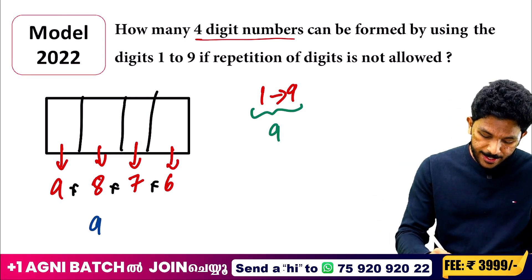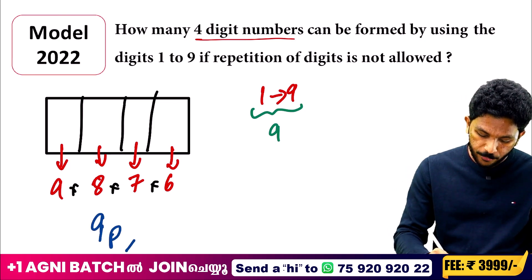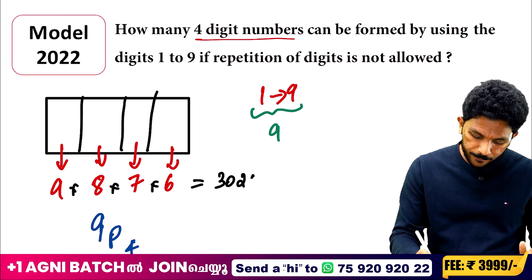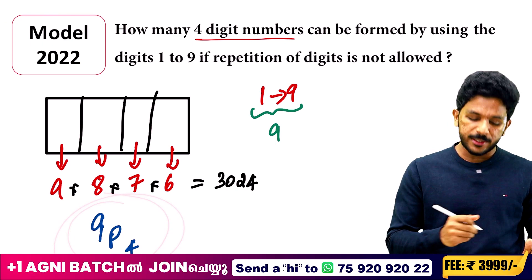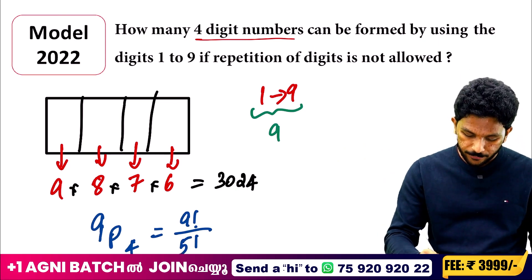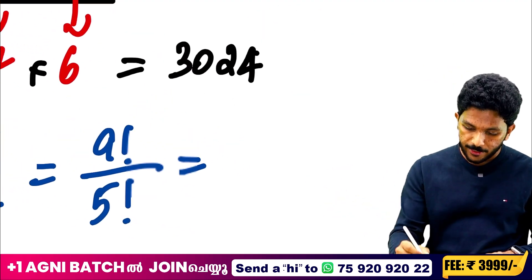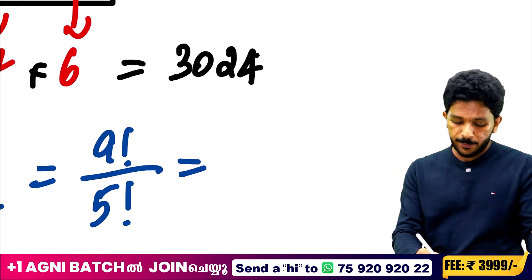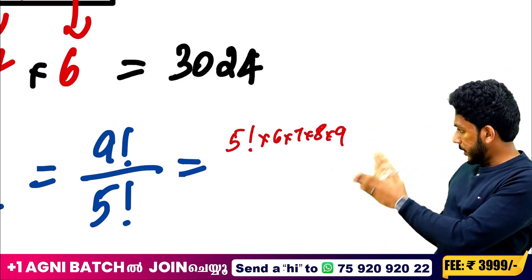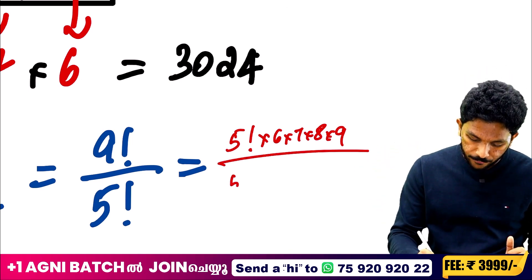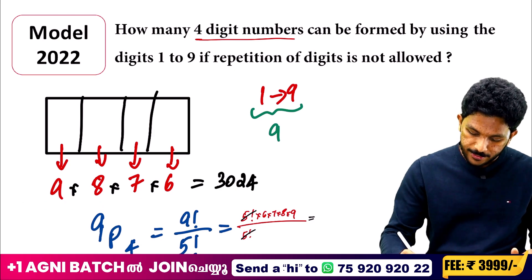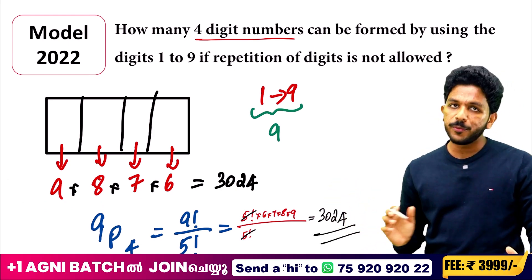The order is important. So the answer is 9P4. I will calculate: 9P4 = 9! / (9−4)! = 9! / 5!. The 9 factorial divided by 5 factorial cancels to give 6 × 7 × 8 × 9 = 3024. So the answer is 3024.